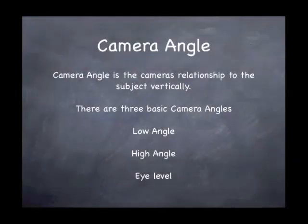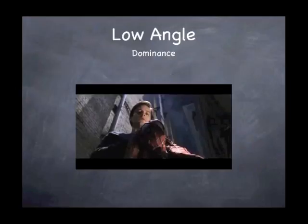Hi, welcome back. Today we're going to be talking about camera angles. Camera angle is the camera's relationship to the subject vertically. There are three basic camera angles that you can use — you can go in between these, but these are the three basic ones: low angle, high angle, and eye level. Let's get into what they mean.